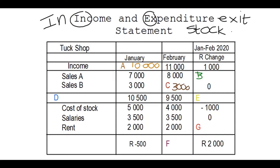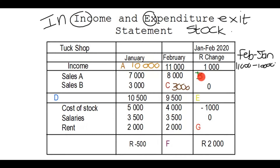Now let's look at how to determine the rand change. In an income and expenditure statement there's often a last column showing the percentage change or the amount of change. Between January and February, what changed in the income? You can say February minus January: 11,000 minus 10,000 gives you 1,000 rand.